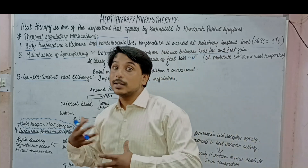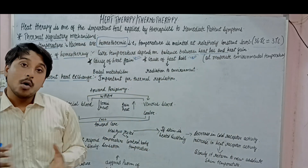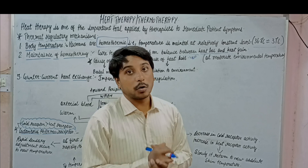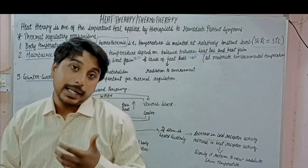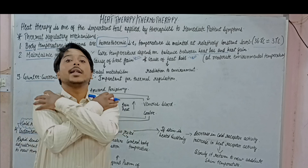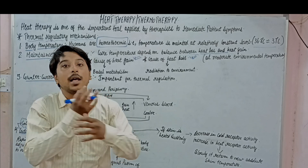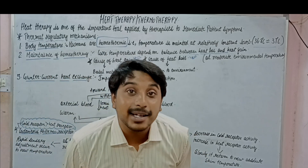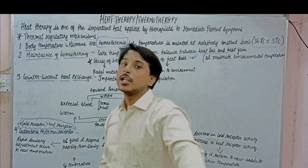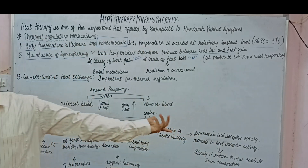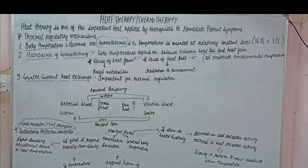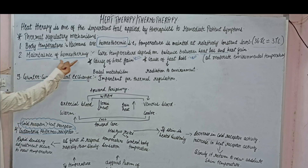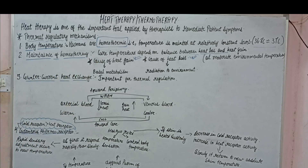If our environment is very hot — for example, you are in summer season and there is a lot of temperature — then what would occur in that condition? First of all, we will get a lot of heat from the environment via radiation, and then sweating comes into play, which helps to reduce the heat and tries to maintain the body temperature. This is about the maintenance of homeothermy.